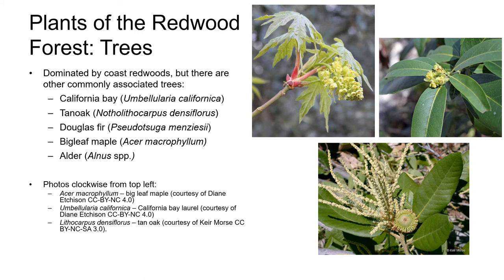You'll often see California Bay, Tan Oak, Doug Fir, and Madrone. In moist areas where there are openings in the redwood canopy, you'll often find the winter deciduous trees big leaf maple and red alder or white alder. These deciduous trees are also common components of the riparian woodland plant community.